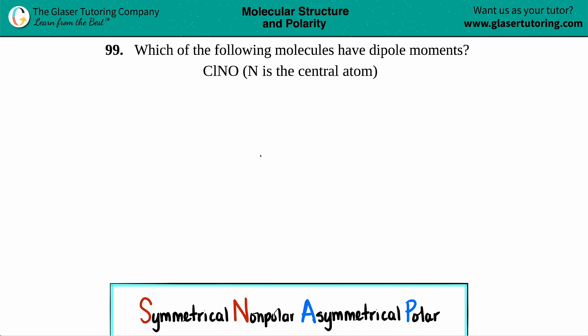Number 99: Which of the following molecules have dipole moments? We have ClNO where N is the central atom. Okay, so what is a dipole moment? A dipole moment is when you have an unequal distribution of electrons across the entire molecule.